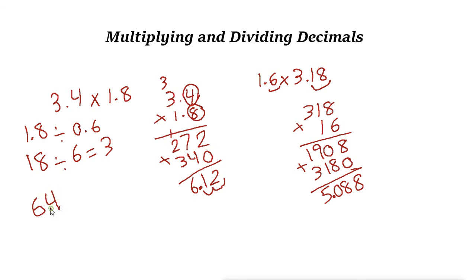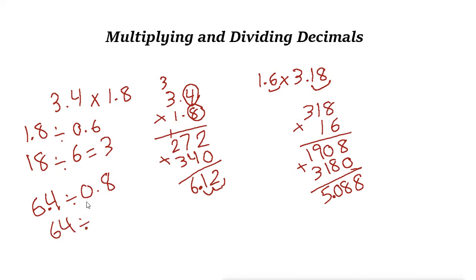Another example: 6.4 divided by 0.8. Again, the easiest way is to multiply both by 10 to remove the decimal point. 6.4 times 10 becomes 64, and 0.8 times 10 is 8. So 64 divided by 8 — the answer is 8.